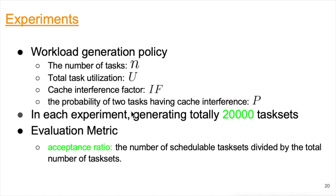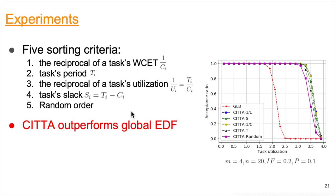We systematically generated synthetic workloads by varying the number of tasks n, total task utilization u, cache interference factor f, and the probability of two tasks having cache interference p_in. In each experiment, we generated 20,000 task sets. We use the acceptance ratio — defined as the number of schedulable task sets divided by the total number of task sets — as the evaluation metric. We consider five sorting criteria: non-increasing order of worst-case execution time, task period, task utilization, task slack, and random order. We show one example result: 20 tasks scheduled on four cores, with interference factor 0.2 and probability 0.1.